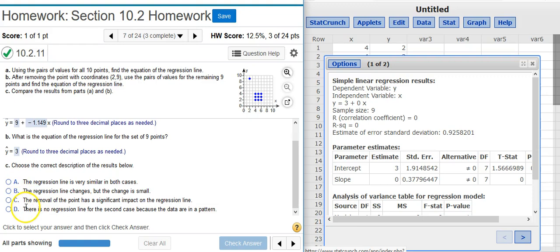Answer option C says the removal of the point has a significant impact on the regression line. Well, that's true. But let's check out answer option D before we select this answer. Answer option D says there is no regression line for the second case because the data are in a pattern. Well, there actually is a regression line. We've got the equation right here. So answer option D isn't going to work for us. Answer option C is the one we want.